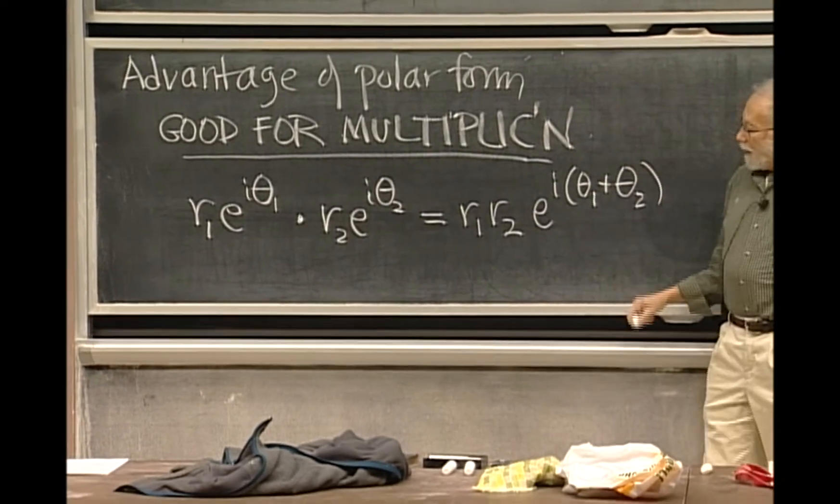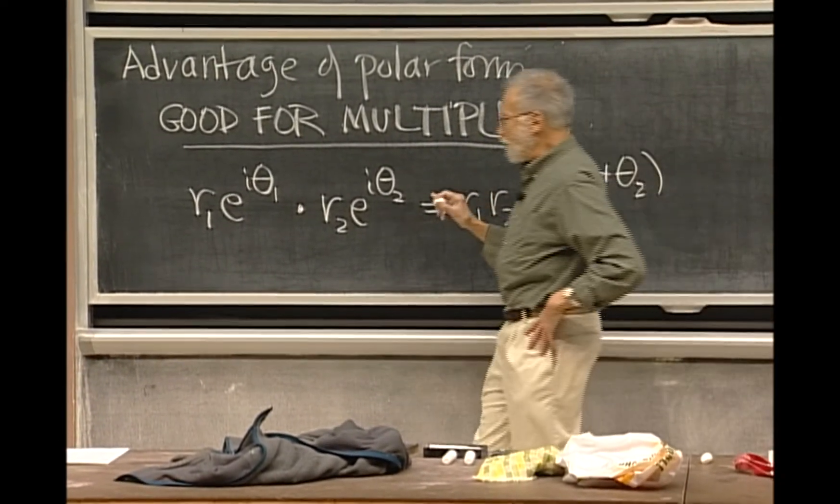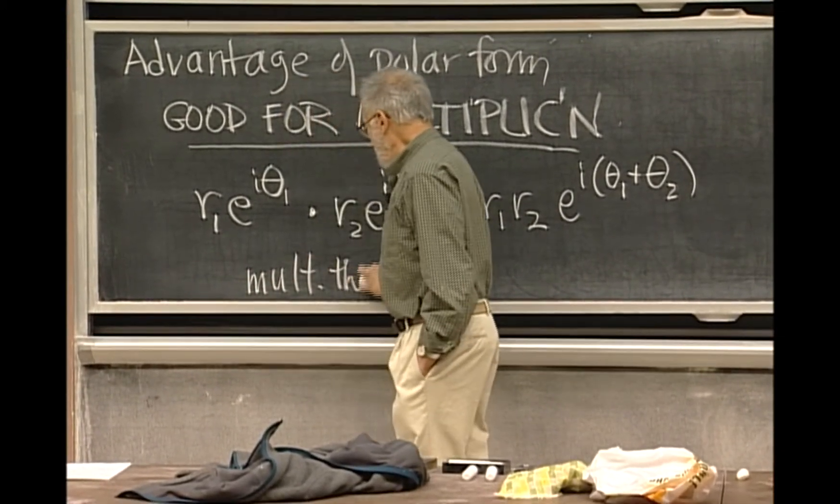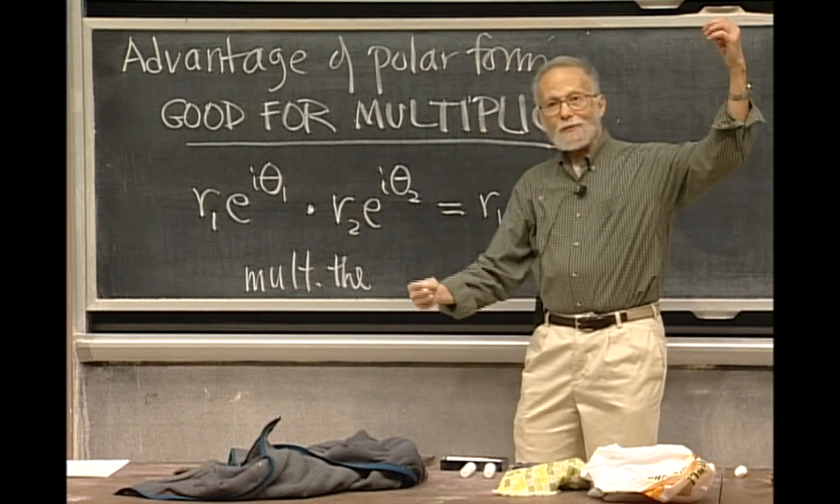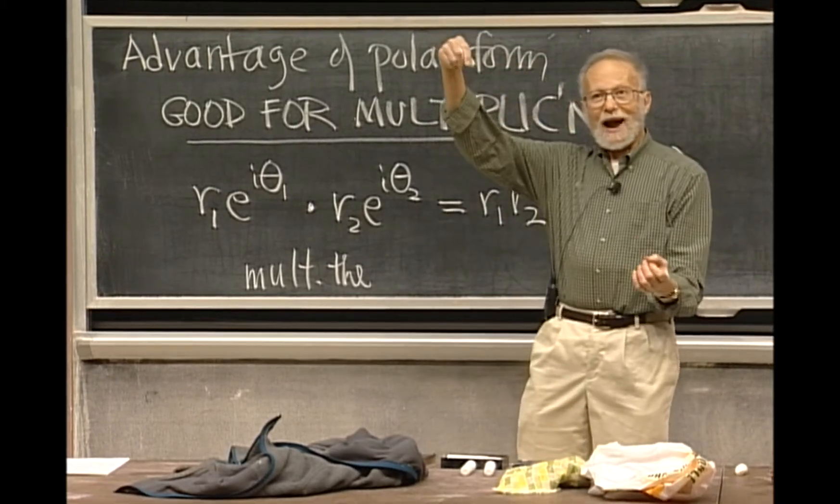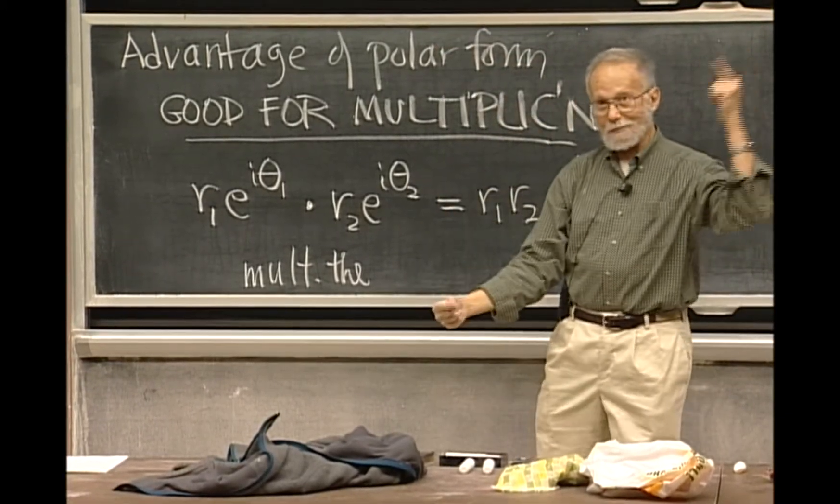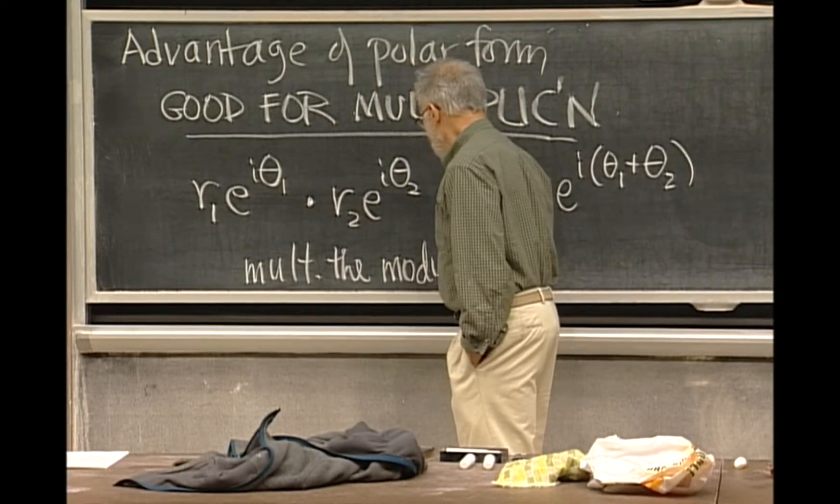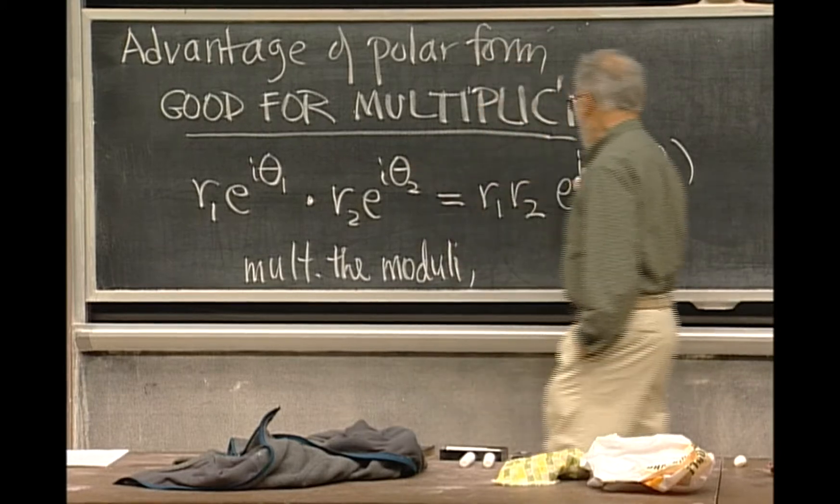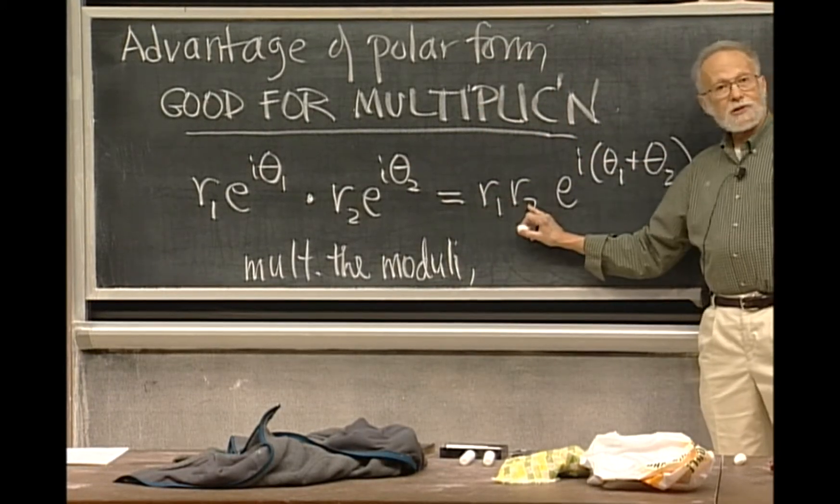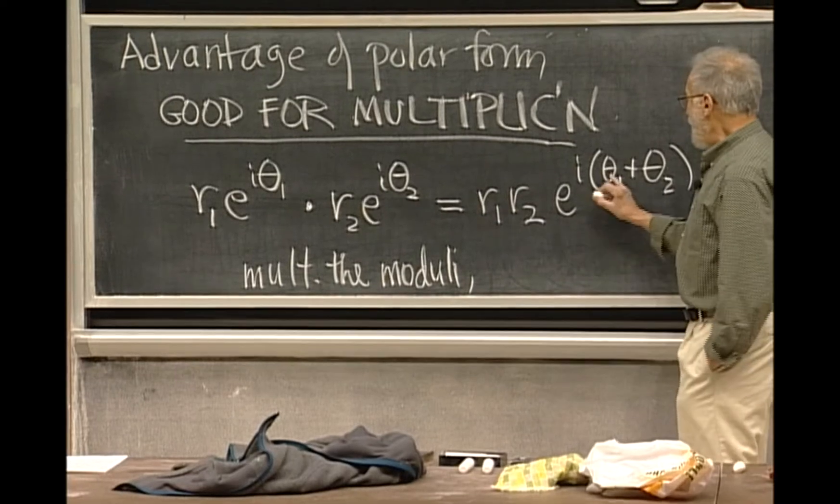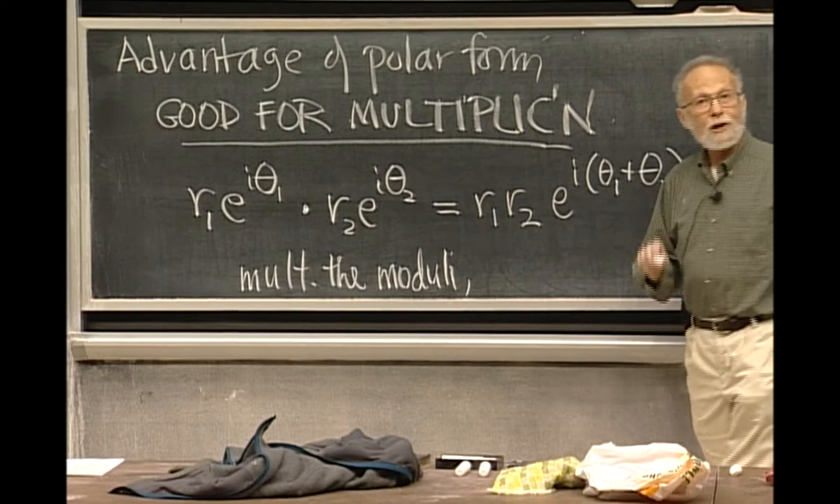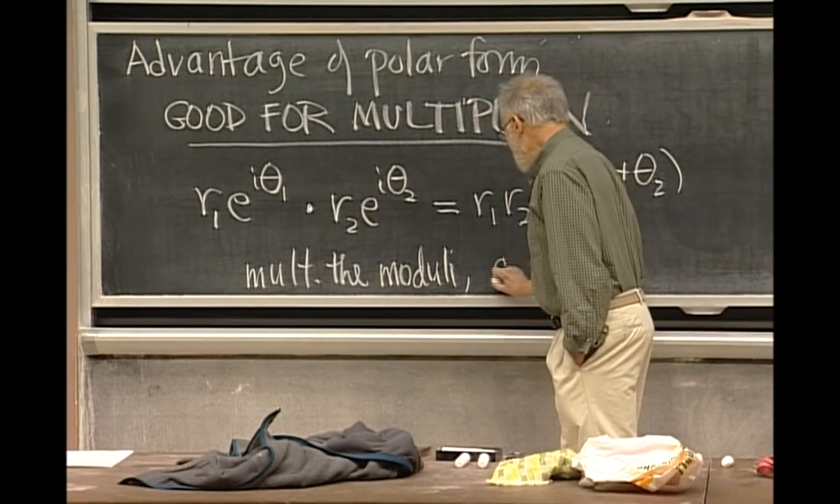Which makes very clear that to multiply geometrically two complex numbers, you multiply the moduli, the r's, the absolute values, how long the arrow is from zero to the complex number. Multiply the moduli and add the argument. So the new number, its modulus is the product of r₁ and r₂, and its argument, its angle, polar angle, is the sum of the old two angles.